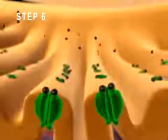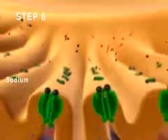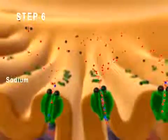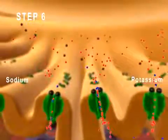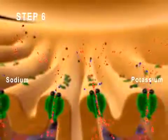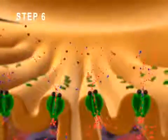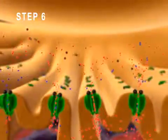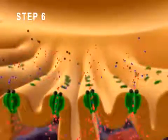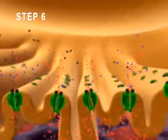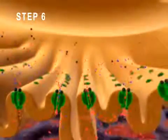Step 6: Sodium ions, shown here in red, enter the muscle fiber and potassium ions, shown here in blue, exit the muscle fiber. The greater inward flux of sodium ions relative to the outward flux of potassium ions causes the membrane potential to become less negative.